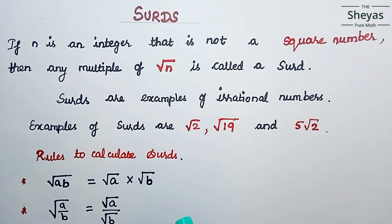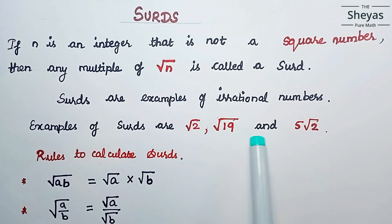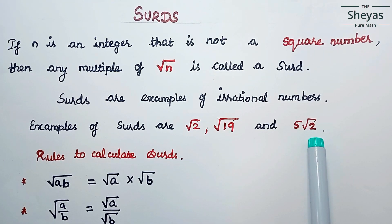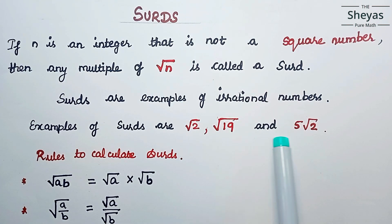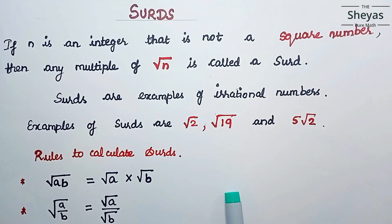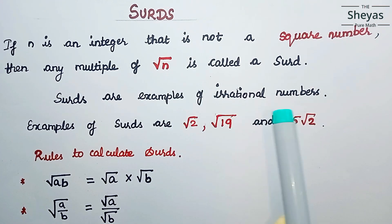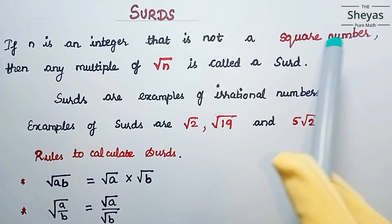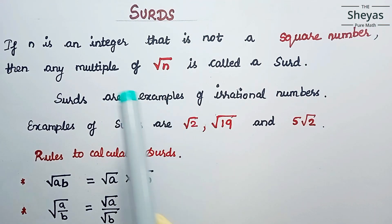Examples of surds are root 2, root 19, and 5 root 2, or radical 2, radical 19, and 5 radical 2. Suppose if I am taking root 4, that is radical 4, the answer is 2, so radical 4 is not a surd. You have to note this point: n should not be a square number.